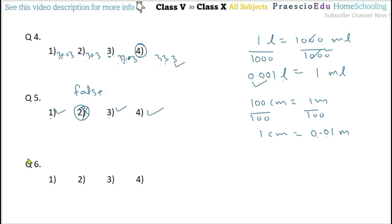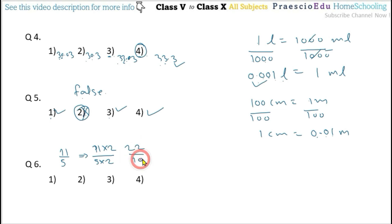Question number 6: which of the following is the equivalent decimal fraction of 11/5? To be an equivalent decimal fraction, the denominator should be 1, 10, 100, etc. In option 1: multiply 5 by 2 and numerator 11 by 2 to get 22/10, and this 10 gives a decimal fraction. Options 2, 3, and 4 are not decimal fractions because there is no common factor to make their denominators a power of 10. So option number 1 is the only correct one.